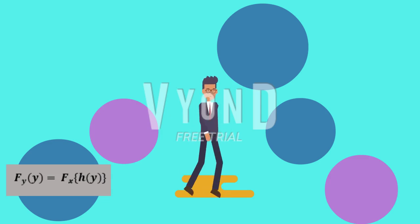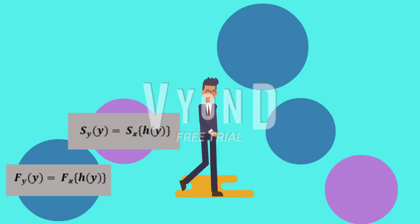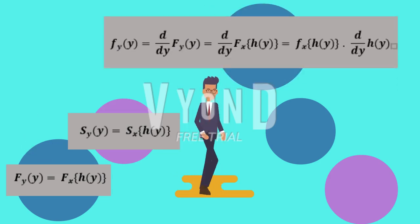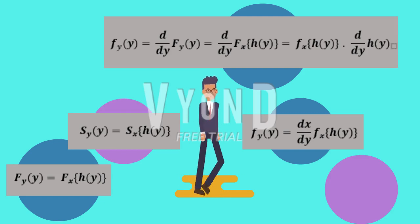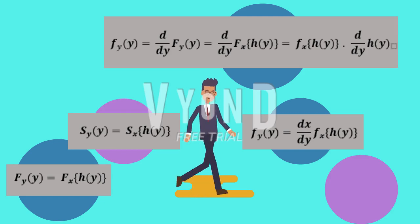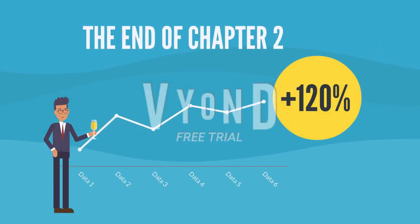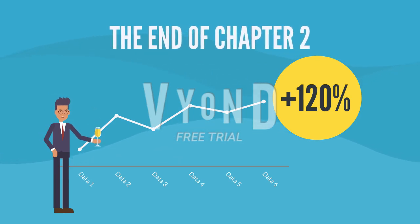Since the SDF is the complement of the CDF, the equation becomes as shown. Next, the PDF is the derivative of the CDF, so we differentiate both sides of the equation with respect to y, and we will obtain the formula shown. Since H(Y) is simply the ratio, we can write the equation accordingly. Finally, the HRF is the ratio of the PDF to the SDF, so we can say that the equation becomes as shown. This is the end of Chapter 2. We hope that this video will help you understand more about this chapter. Thank you for watching this video, and goodbye everybody.